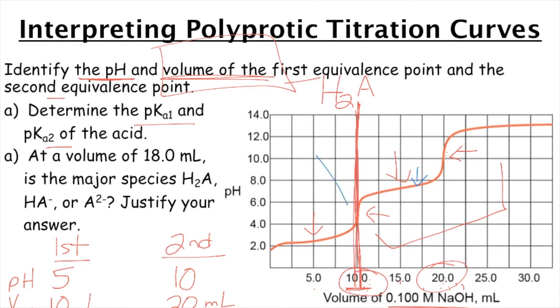Okay. So at this equivalence point, the first hydrogen is completely gone. So over here, you've got H2A. When you get to here, you've got HA minus converting into A2 minus.